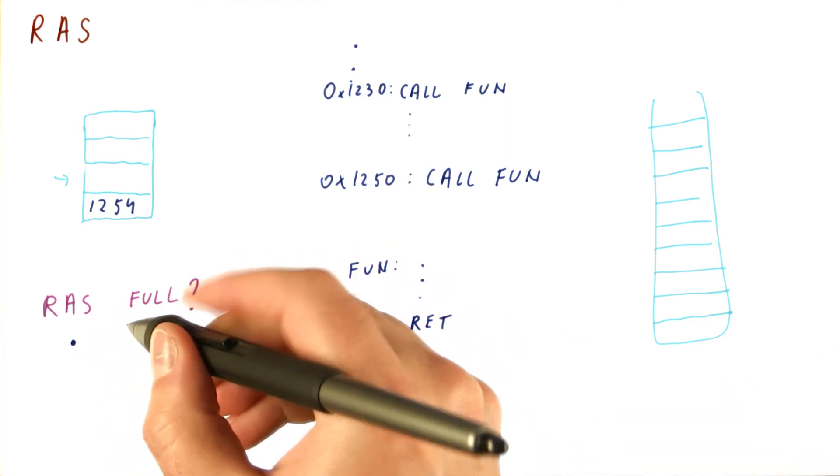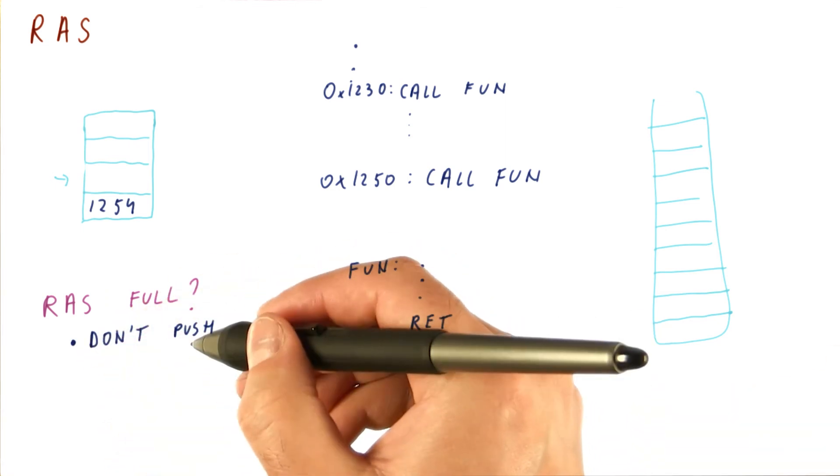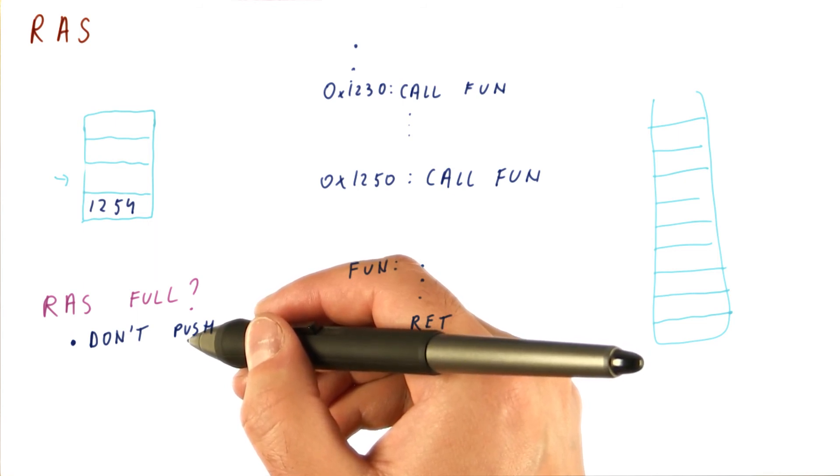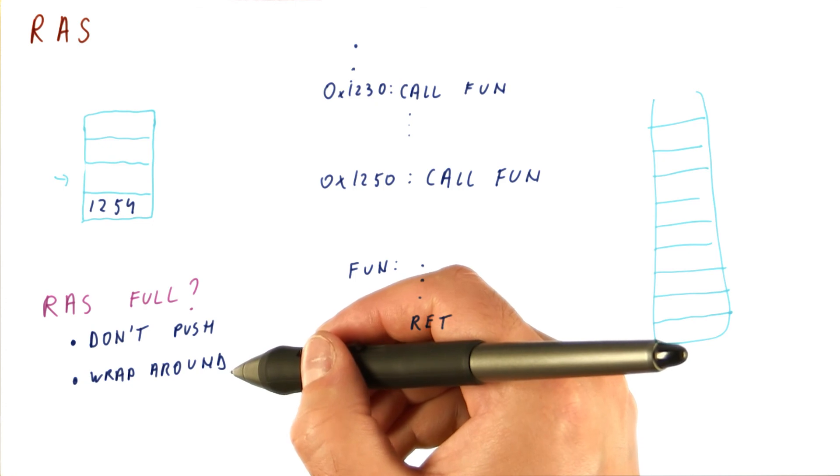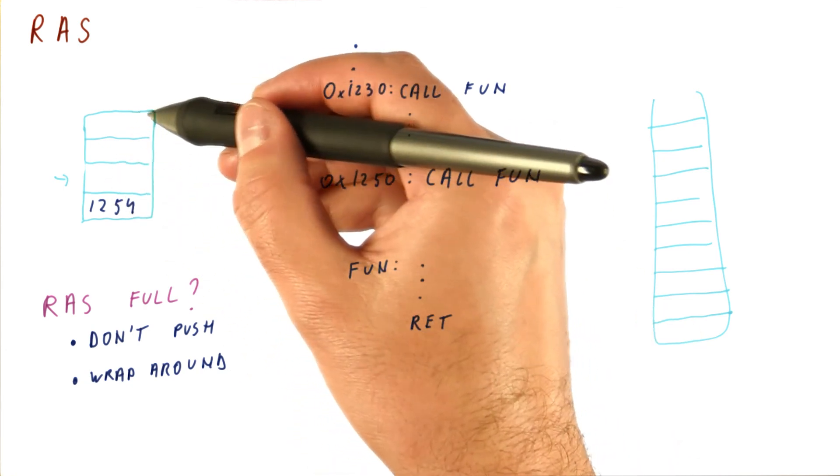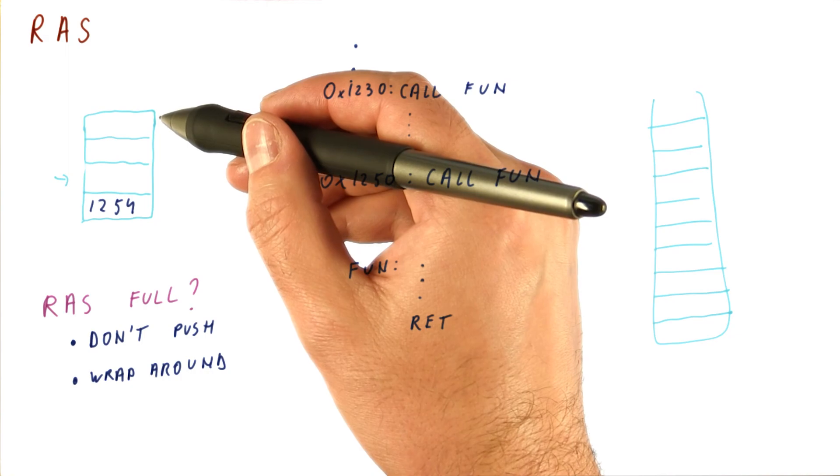There are really two choices. One, don't push anything. Pretty much preserve what we already have on our RAS so that we don't overwrite anything. The other choice is, once we have filled these four entries, just wrap around and keep filling them if we call more functions.